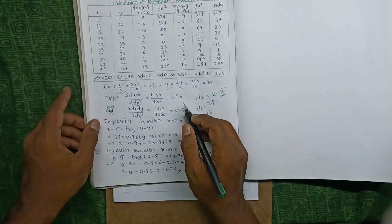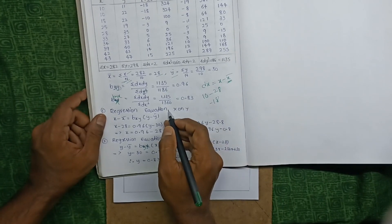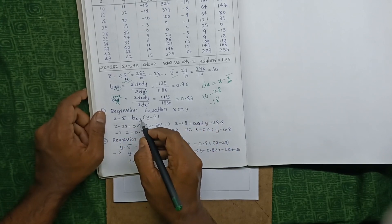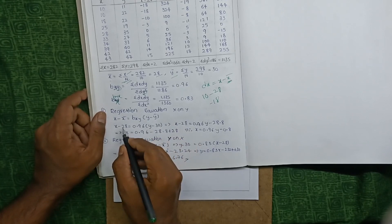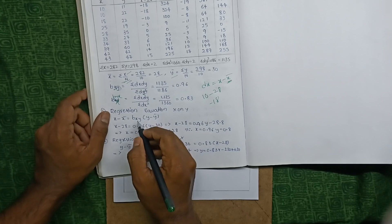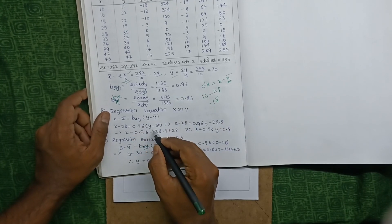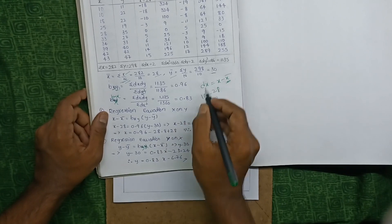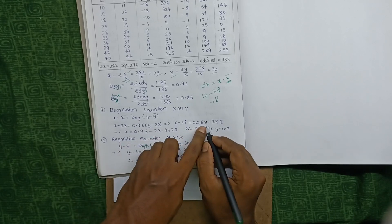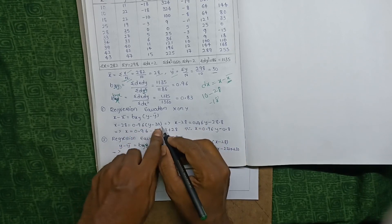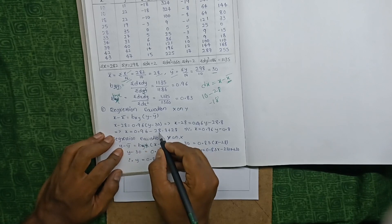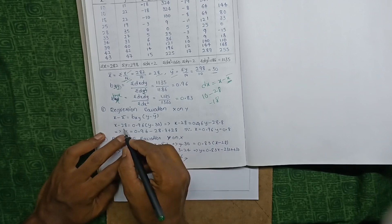Substitute the values into the regression equation x on y: x minus x̄ equals bxy times (y minus ȳ). Here x̄ equals 28 and bxy equals 0.96. So: x minus 28 equals 0.96 times (y minus 30). Expanding: x equals 0.96y minus 0.96 times 30, which gives 28.8. Therefore x equals 0.96y minus 28.8 plus 28.